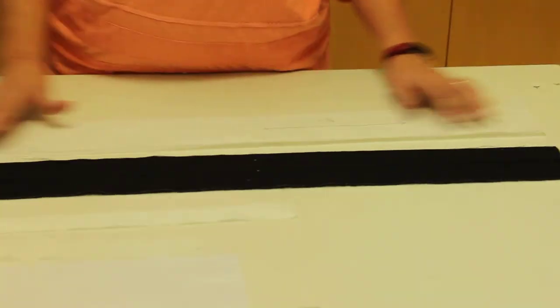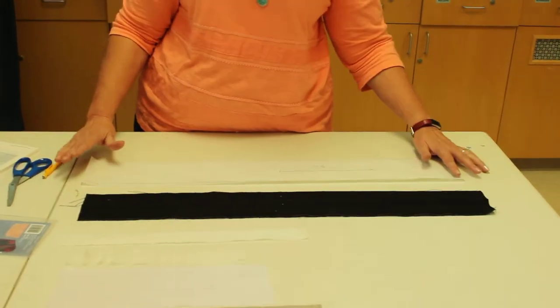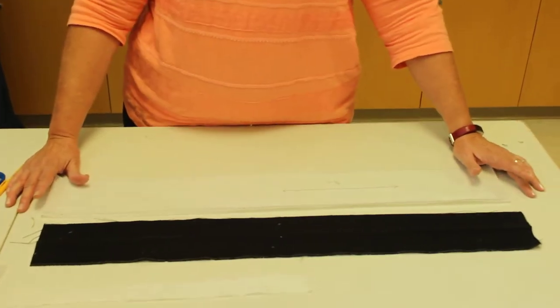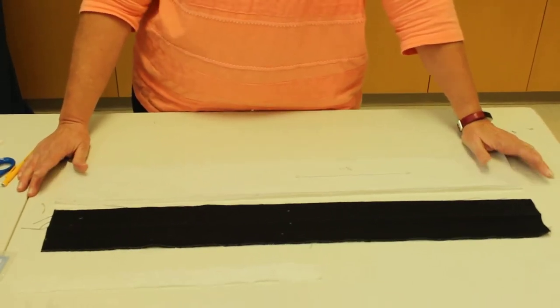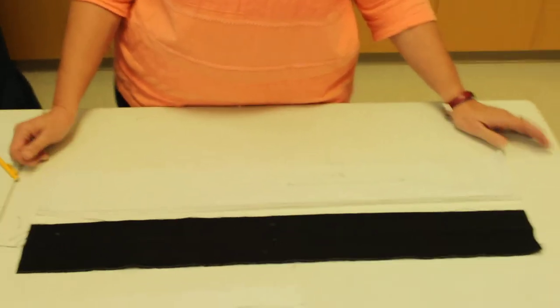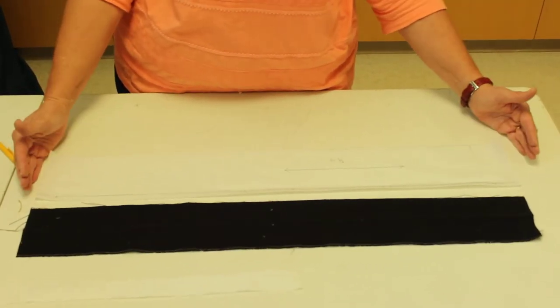And what you have to first decide is the length, and then you need to know the width. So on the length, what you're going to do is you need to take your waist measurement plus ease. So we usually give it one inch ease. So whatever your waist is, plus one inch, is the length you need.